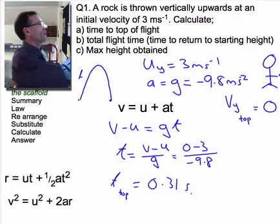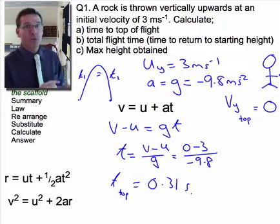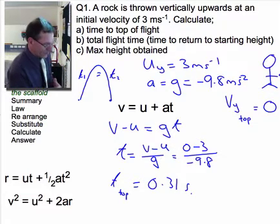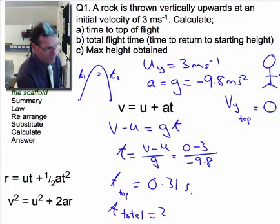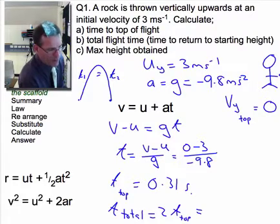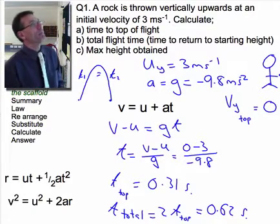The time to the top of flight, if you think of that as t1, it's gonna equal t2. And so the total time of the flight is gonna be simply two times the time to the top of flight, or 0.62 of a second. There we go, we've done a and b.